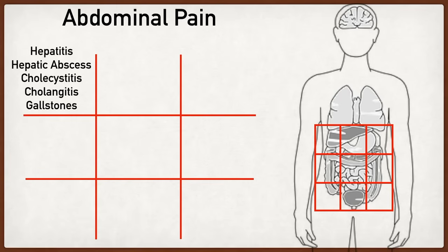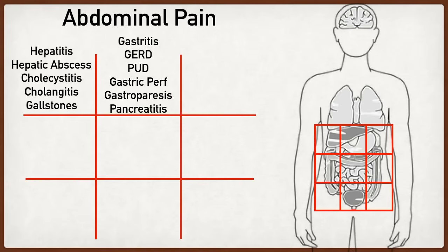Moving on to the epigastric region — parts of the liver and biliary system extend here, so a lot of the right upper quadrant pathology can also lead to epigastric pain. With the stomach and pancreas also present, we might see gastritis, GERD, peptic ulcer disease, gastric perforation, gastroparesis, and pancreatitis.